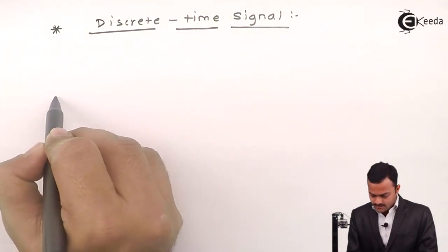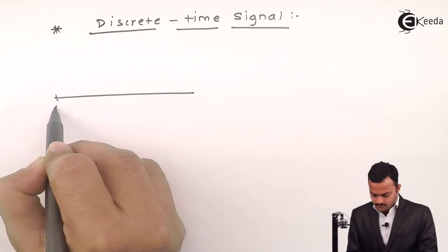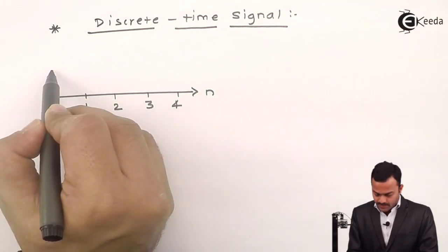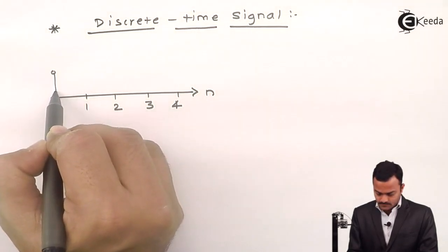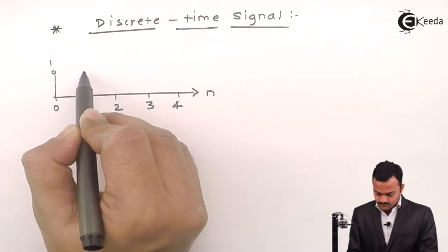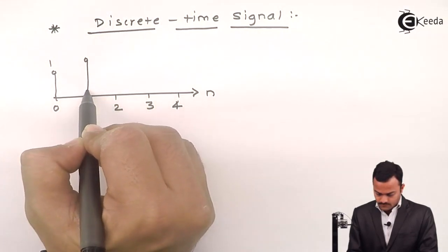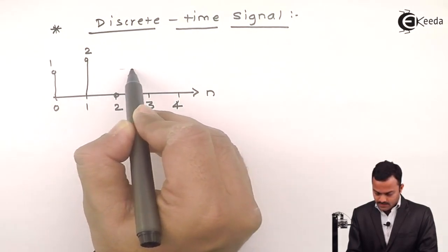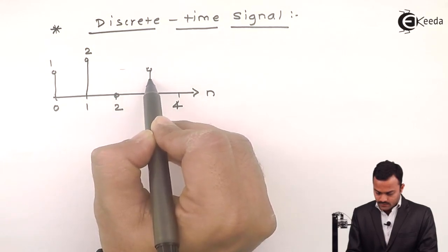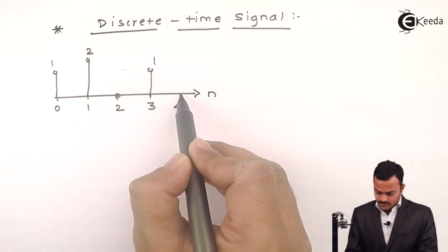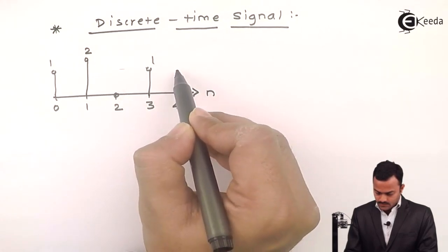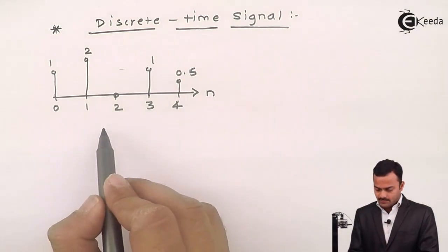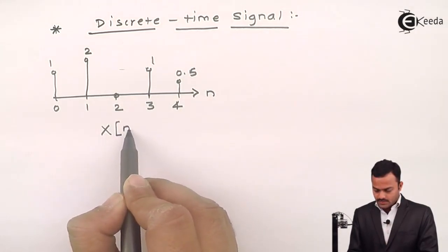So, consider one sequence, x of n. This is 1, this is 1, this is 2, then I have 0, and let's consider this value is 1 once again, with this value as 0.5. So, just taken one sequence randomly, which is the original sequence, I call that as x of n.